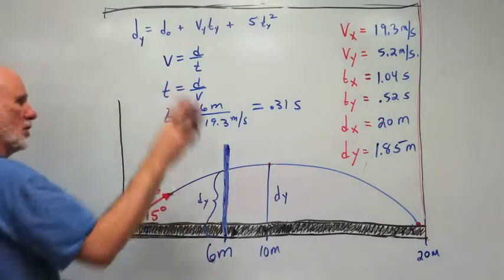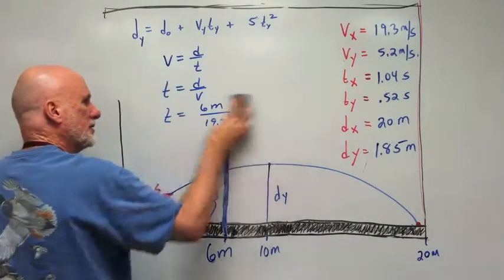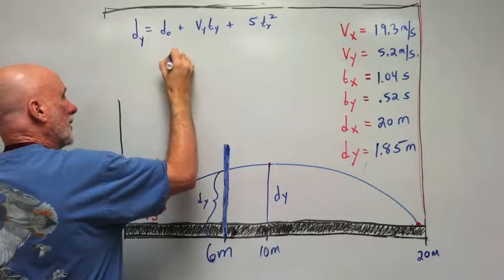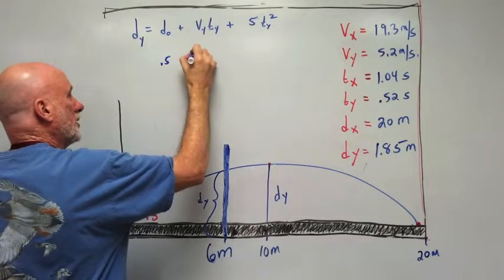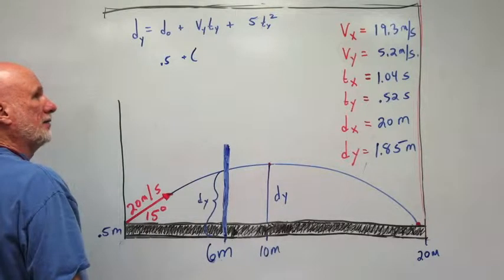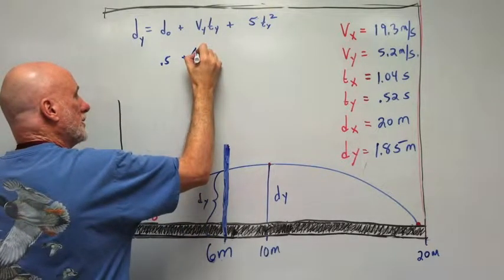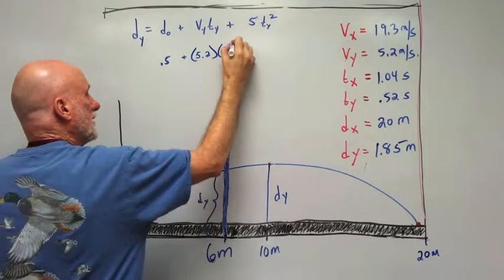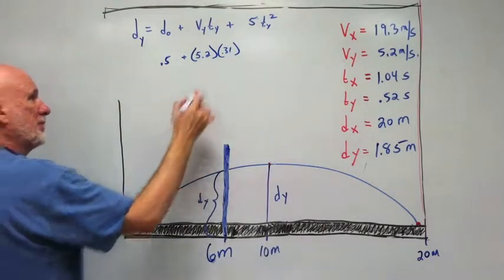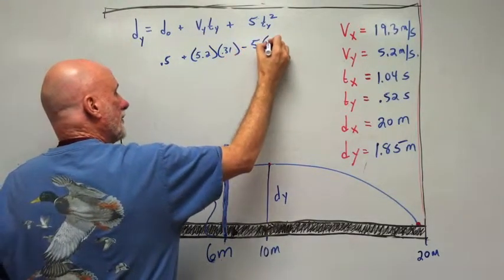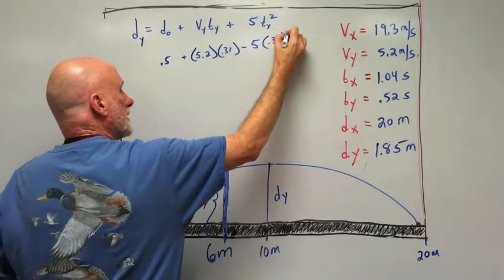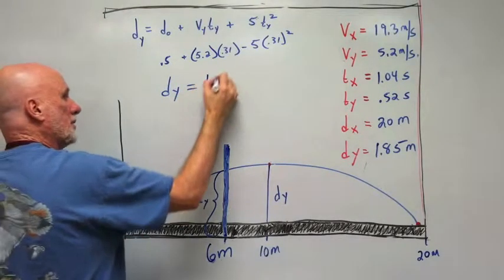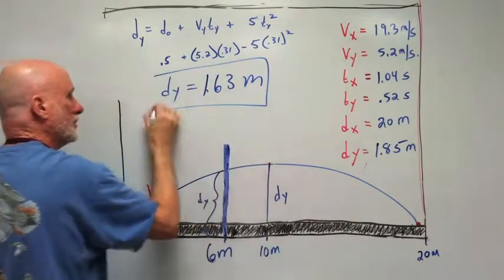Okay, now all the work is done. Let's erase this and remember 0.31 seconds. 0.5 meters plus Vy is 5.2 times 0.31 seconds. It's going up, so this will be minus 5 times 0.31 seconds squared. dy equals 1.63 meters.